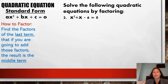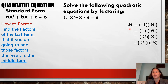Let's have another one: x squared plus x minus 6 is equal to 0. It's already in standard form. Think of two numbers that when multiplied give negative 6, and when added give positive 1, since the coefficient of x is 1. The combinations are: negative 1 times 6, positive 1 times negative 6, negative 2 times 3, or positive 2 times negative 3. When we add positive 2 and negative 3... When we add negative 2 and positive 3, the answer is positive 1.